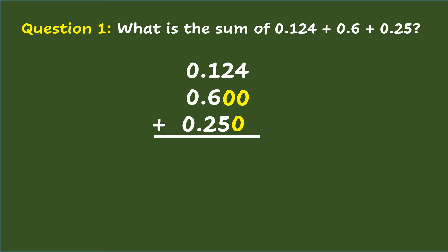Beginning with the thousandths place: four plus zero plus zero equals four. Two plus zero plus five equals seven. One plus six plus two equals nine. Then bring down zero and the decimal point. So the final answer is nine hundred seventy-four thousandths.